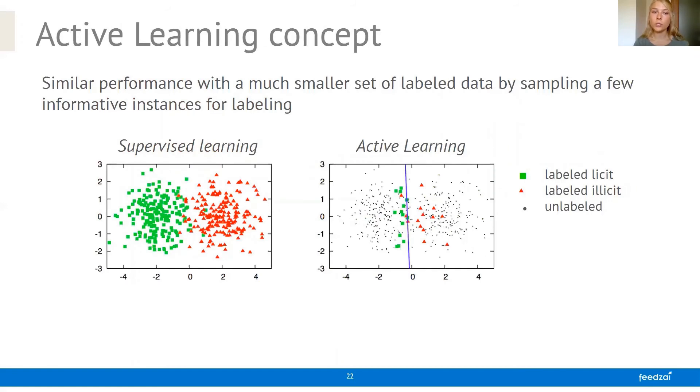And in order to find that out, we used active learning. And active learning is a concept where we try to achieve a similar performance to supervised learning, but with a much smaller set of labeled data. And we do this by sampling only a small set of informative instances for labeling so that the algorithm can learn much faster.